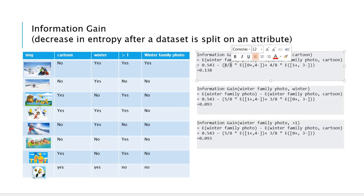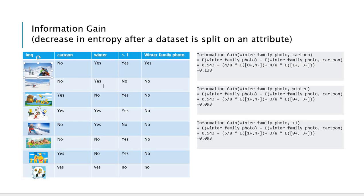So total eight pictures, we just have four cartoon pictures here multiplied by the entropy of the cartoon pictures. The cartoon pictures has no winter picture and just four pictures of the cartoon pictures. And the remaining is like this picture and this picture and this picture and this picture. So we have one family picture, one family winter picture. So we say one plus here and the others are not the winter family picture. After we calculate this one, the result is 0.138.